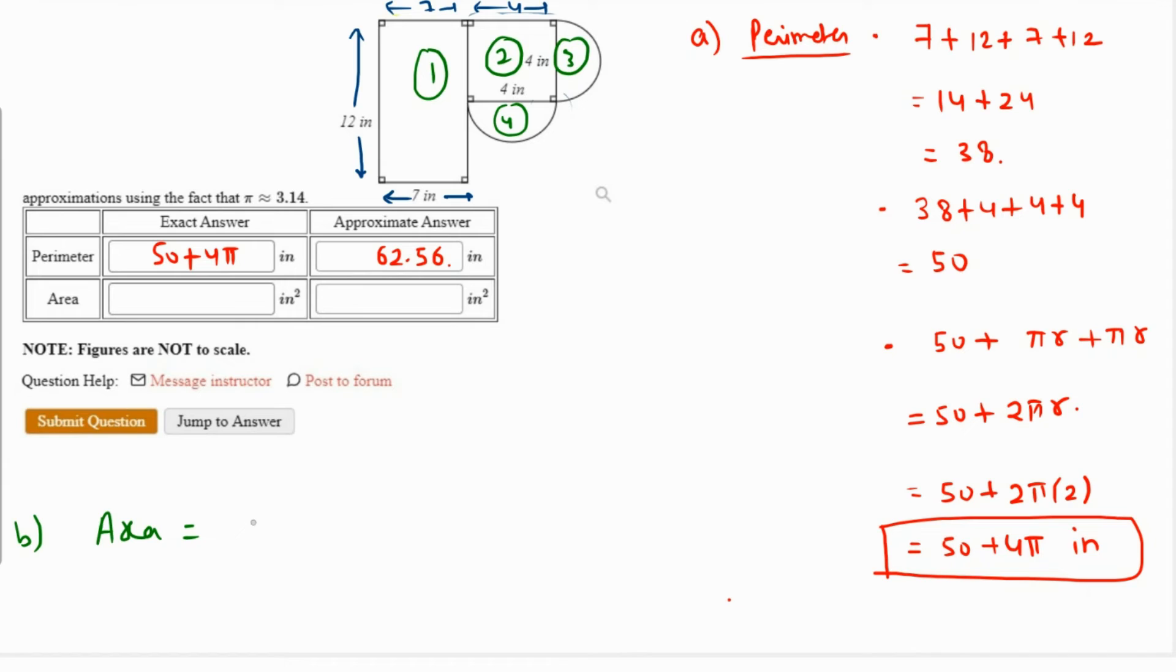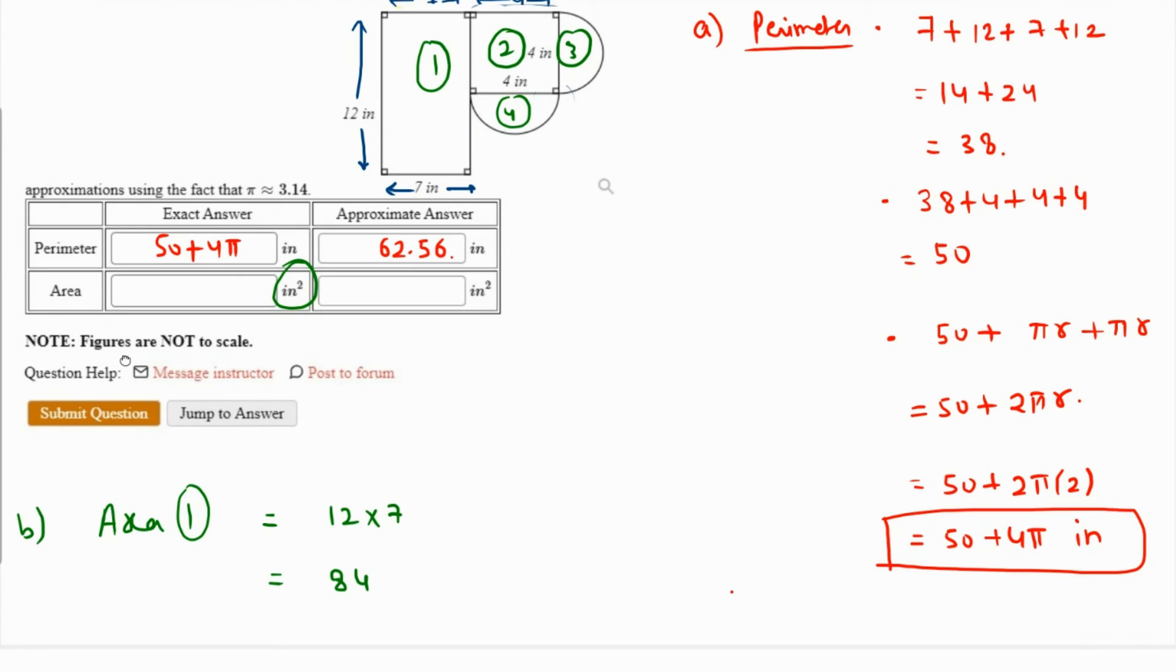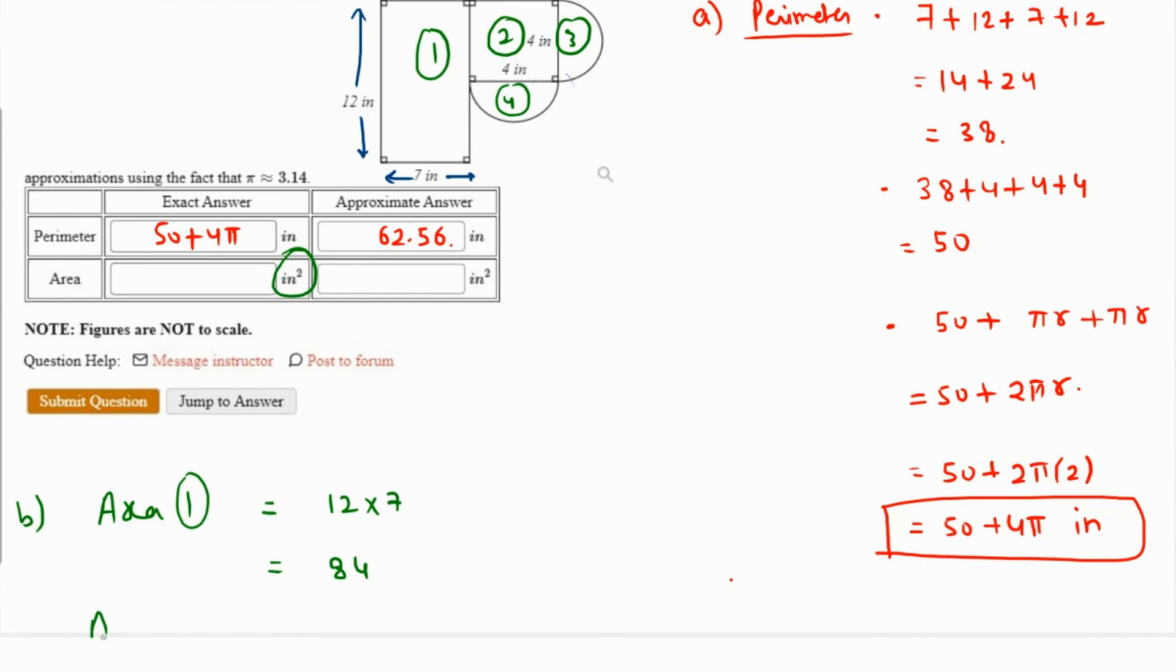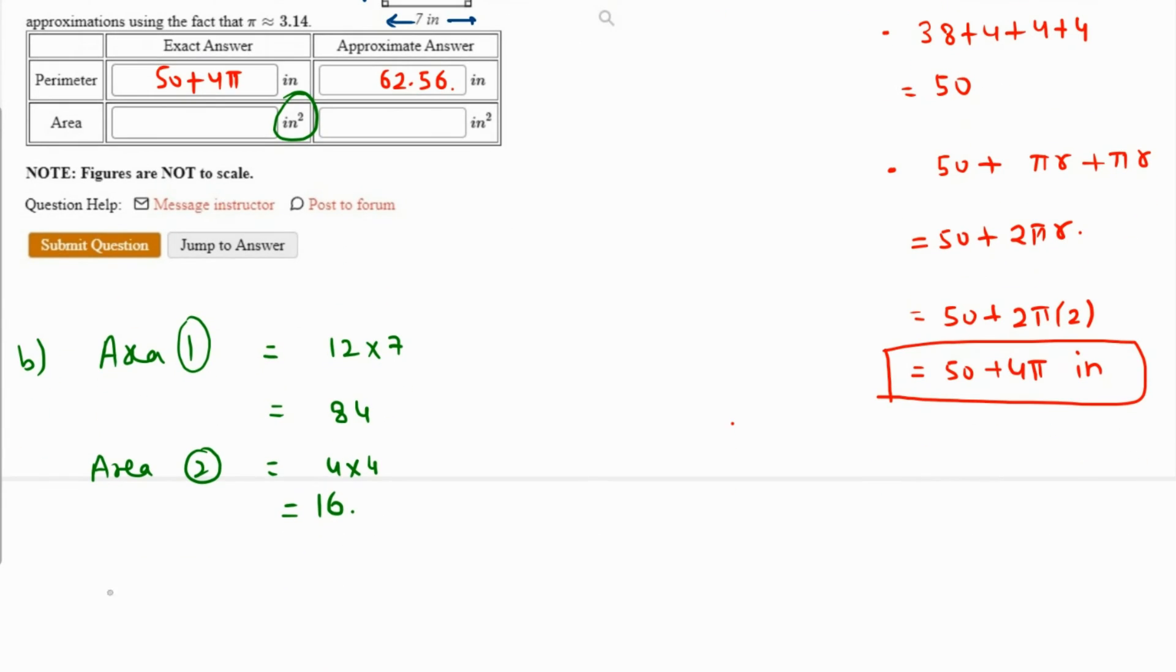The area of the first part is going to be length times width, so that's 12 times 7, which is 84. The unit is definitely inches squared, so I'm not going to write it again and again. I'll just write it in the final answer. Then the area of figure 2, figure 2 is a square, so area of a square is 4 times 4, which is 16.